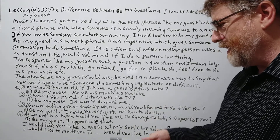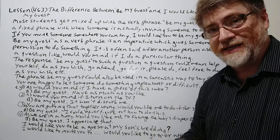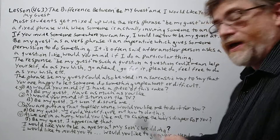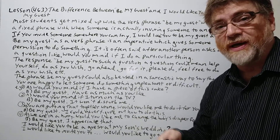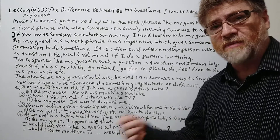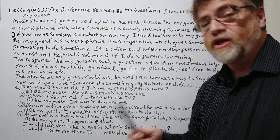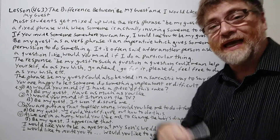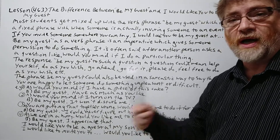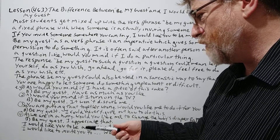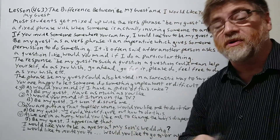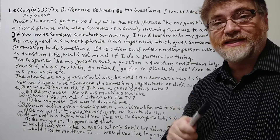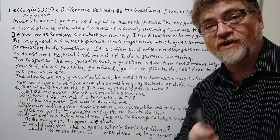Now it is possible, if you really are inviting someone to an event, to say 'I would like you to be my guest at my son's wedding.' That is okay. But to be honest, it's more common to use other phrases like 'I'd like to invite you to,' 'would you like to go to,' 'would you like to attend,' or 'I would like you to attend.' Those are even more common. So a lot of students think that's what you mean when you say 'be my guest,' but no — 'be my guest' as a verb phrase has all those other uses I've explained.